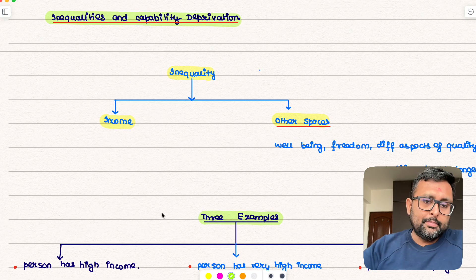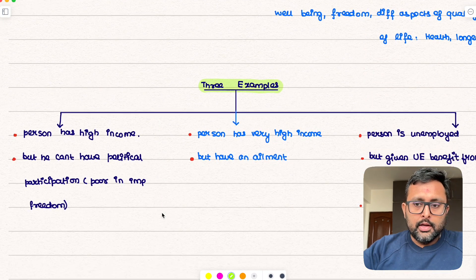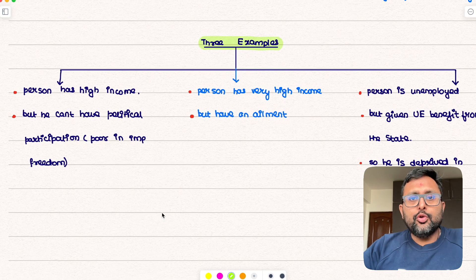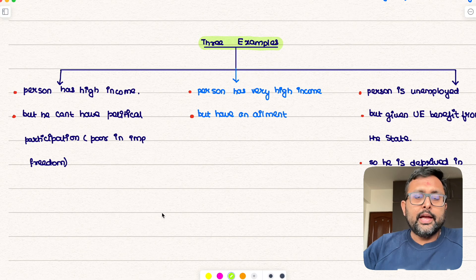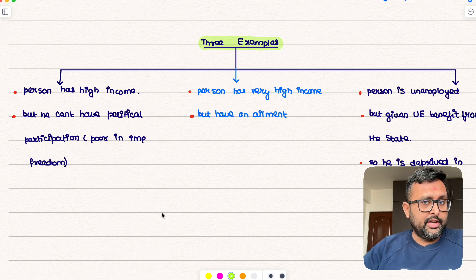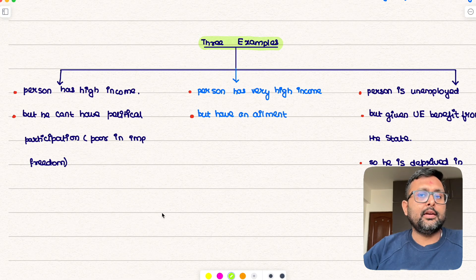He gave three examples. He said why don't you look at it in this way. In the first example he is comparing income inequality vis-a-vis other kinds of inequality. So in the first example you have person has high income, so he's satisfied that he has high income, right?